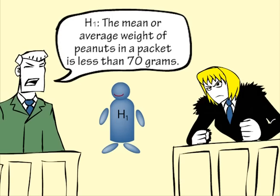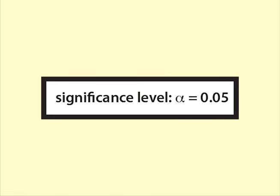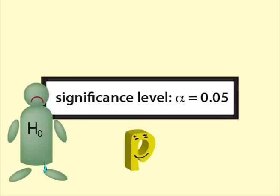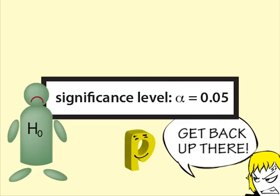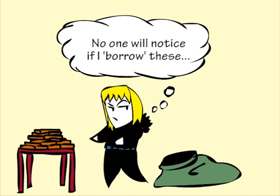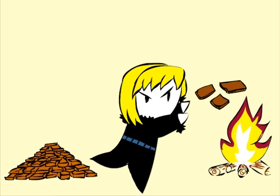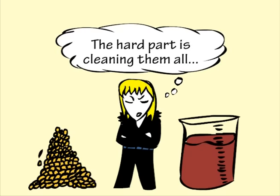Helen decides to use a significance level of 0.05. If the p-value is lower than this, she will reject the null hypothesis. Having decided on her hypotheses and on the significance level, Helen takes a random sample of 20 packets of choco-nutties from her current stock of 400 packets. She melts down the choco-nutties and weighs the peanuts from each packet.